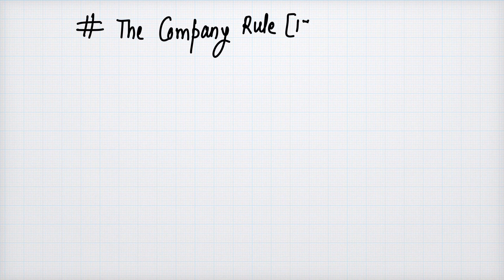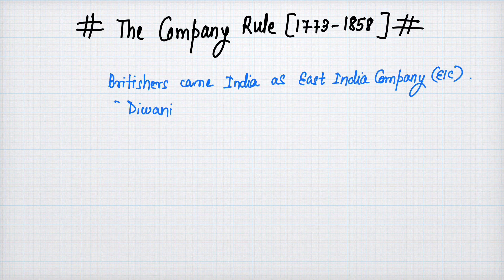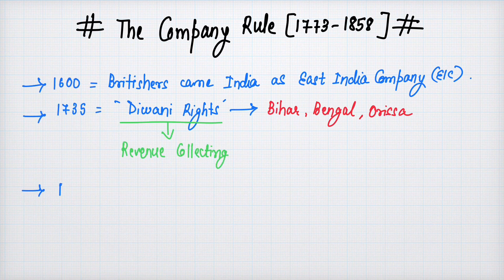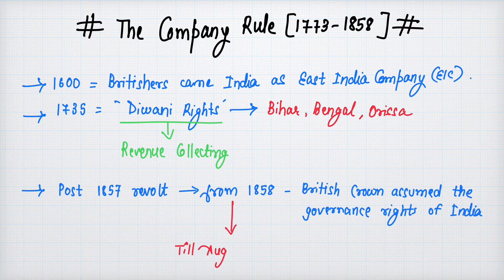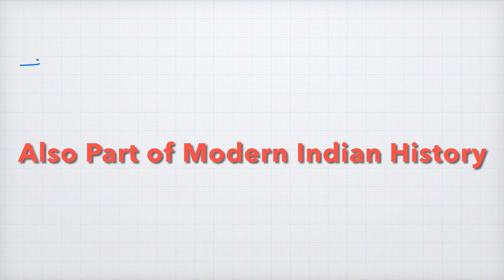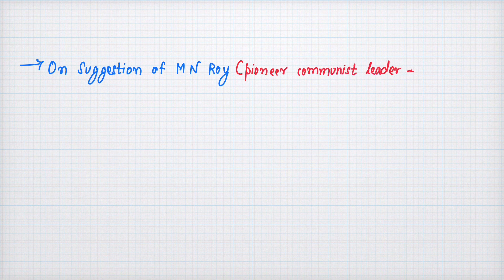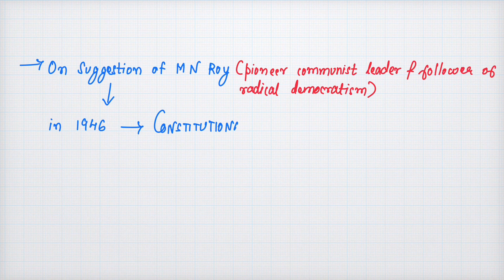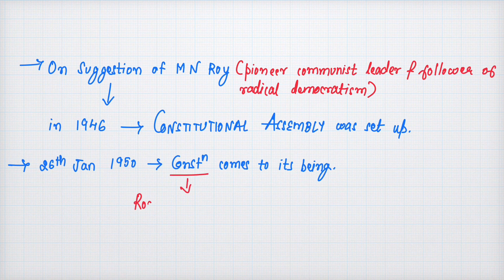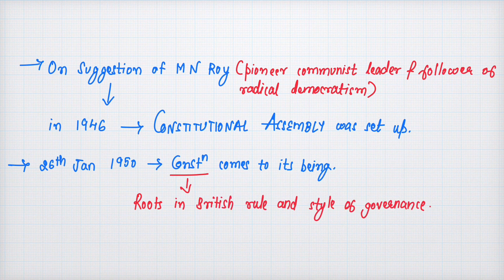We will look at company rule from 1773 to 1858. The British came to India as the East India Company in 1600. In 1765, they got Diwani rights — that is, revenue collecting rights — of Bihar, Bengal, and Orissa provinces. After the revolt of 1857, from 1858, the British Crown assumed governance of India till August 1947, when we got independence. Our constitution is rooted in British rule and style of governance.